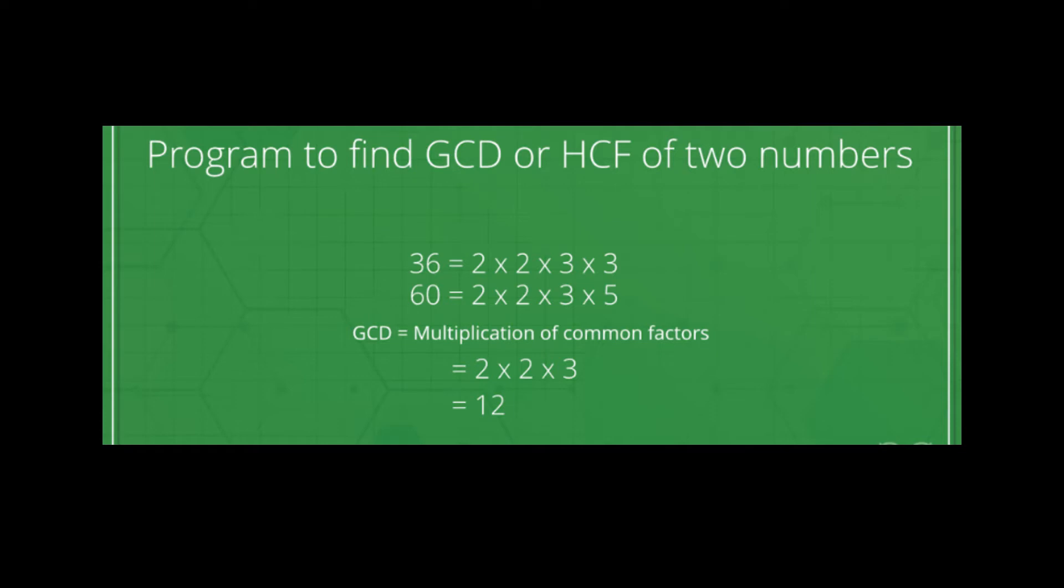We can take the prime factors of this and then take the common factor of those. That will be the GCD of the two numbers, the highest common factor.